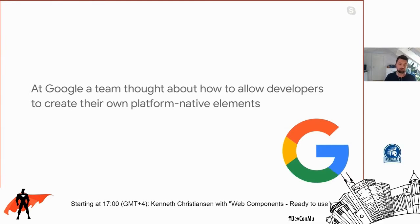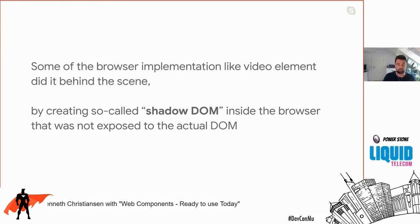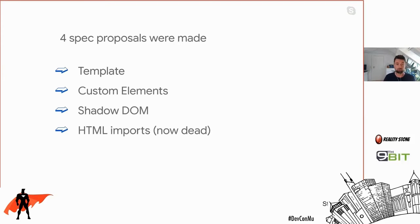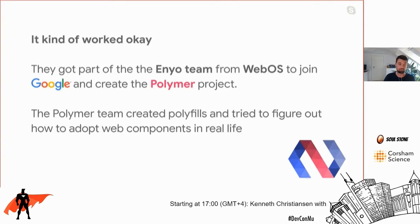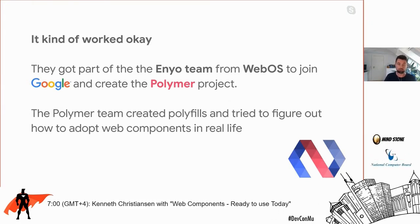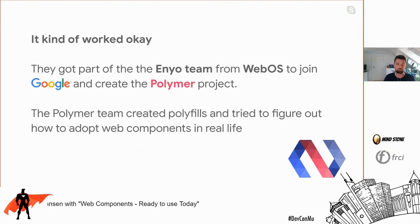At Google, a team thought about how developers could create their own platform-native elements — something like the video element that you could build yourself. It was implemented internally using something called Shadow DOM. The idea was to expose this Shadow DOM to web developers. Four specification proposals were made: the template element, custom elements, Shadow DOM, and the now-dead HTML imports. To validate this approach, some people from the webOS team actually joined Google and created a new product called Polymer.